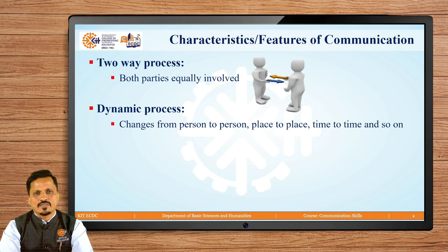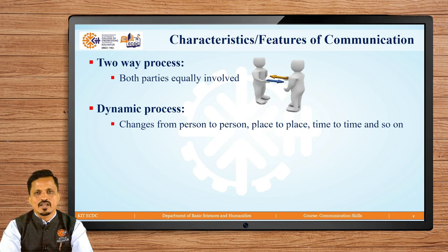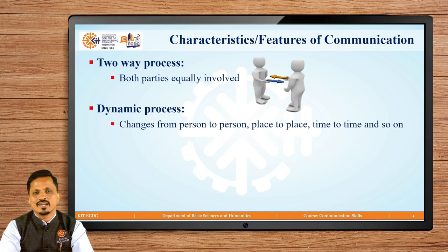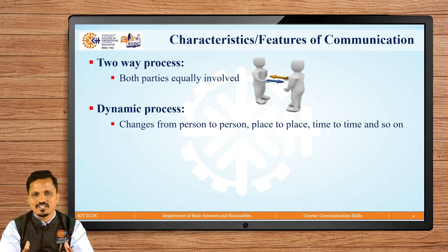Second, communication is a dynamic process — it changes from person to person, place to place, time to time and so on. The way we communicate with our parents, with our teachers, with our friends, and with our relatives is different every time. Our communication style also changes from place to place — the way we communicate at home is different from at college, or informally in the canteen.